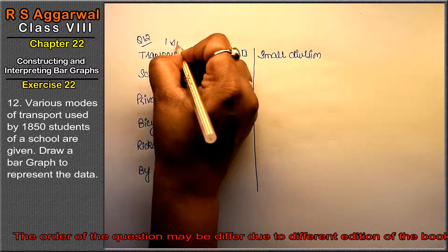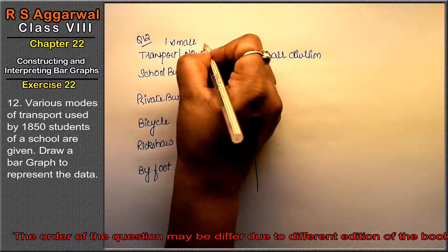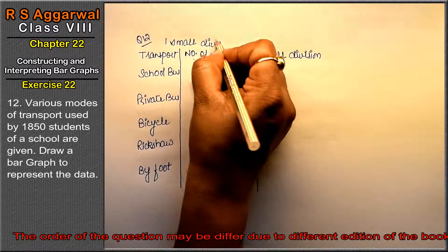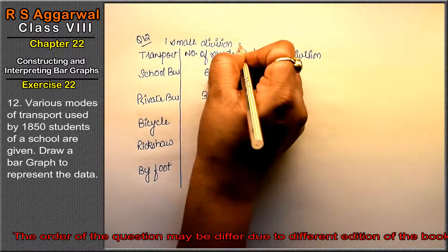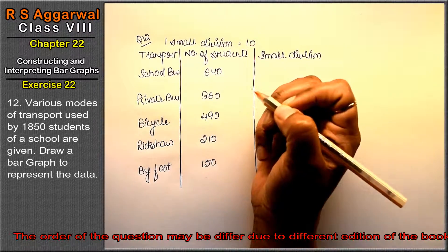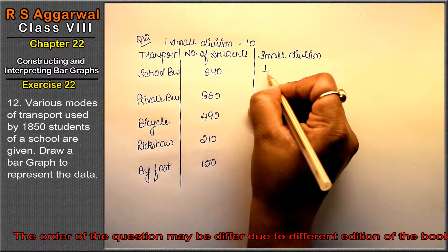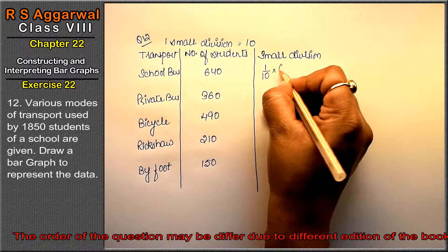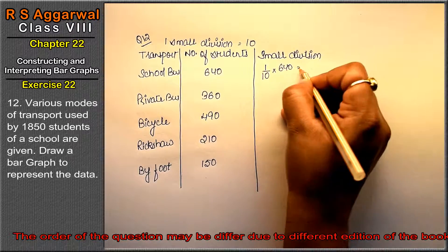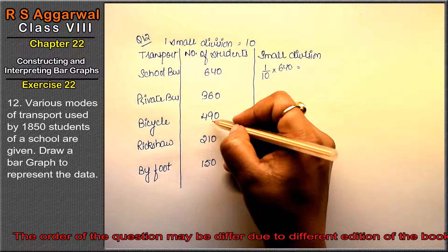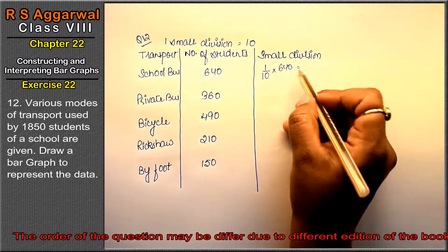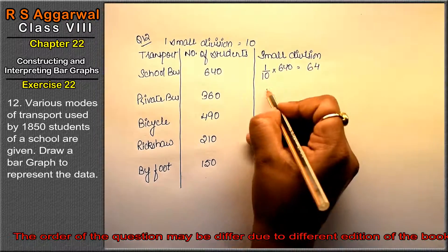Now ab hamein one small division dekhna hai kitne ka leenge. To one small division is equals to 10. Zero sab mein common hai to 10 ka le lete hai. To one upon 10 into 640. Aap chahein toh 20 ka bhi leinge lekin yaha peh points mein aa jayega isliye maine sirf 10 ka lehi hai. Toh yaha gaya 64.